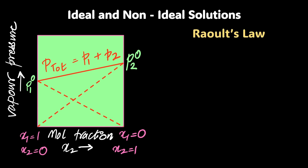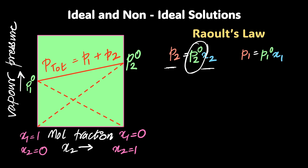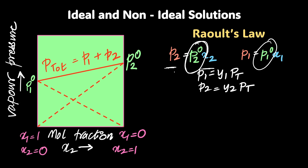What's an ideal solution? Something that follows Raoult's law. Raoult's law states that volatile components have pressures that only depend on their mole fractions and their pure vapor pressure — that's what p1° and p2° represent. You can find the values of individual vapor pressures by multiplying them with the mole fraction in the vapor phase, which is y times the total pressure.